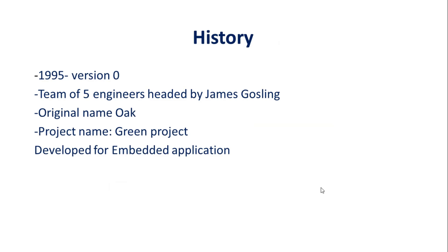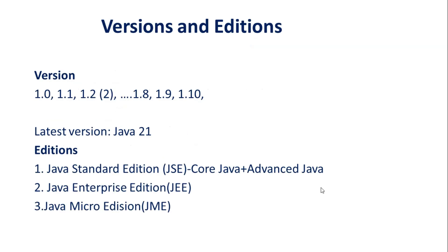You will see the history behind Java. It was developed in the year 1995. A team of five engineers headed by James Gosling developed the language. The original name was Oak. The project was Green project. Initially Java was developed for embedded application. Later it is widely being used for enterprise applications.